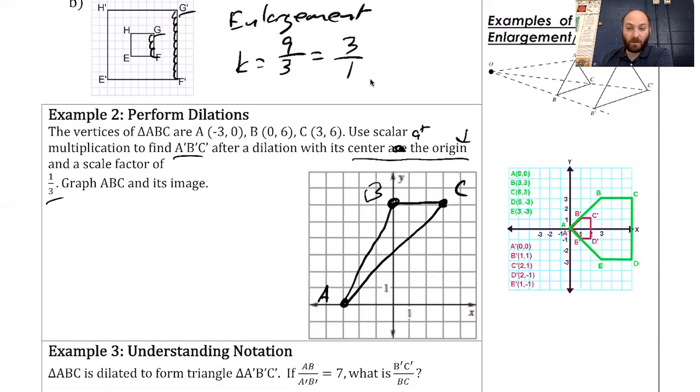Here's the way to do these. Whenever the origin is my center of dilation, to transform ABC into A prime, B prime, and C prime, all I have to do is multiply by my scale factor. One third is the scale factor. So every single point gets multiplied by one third.